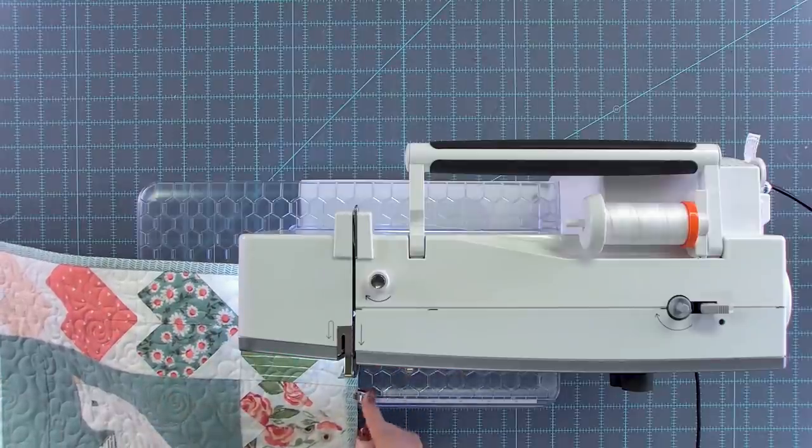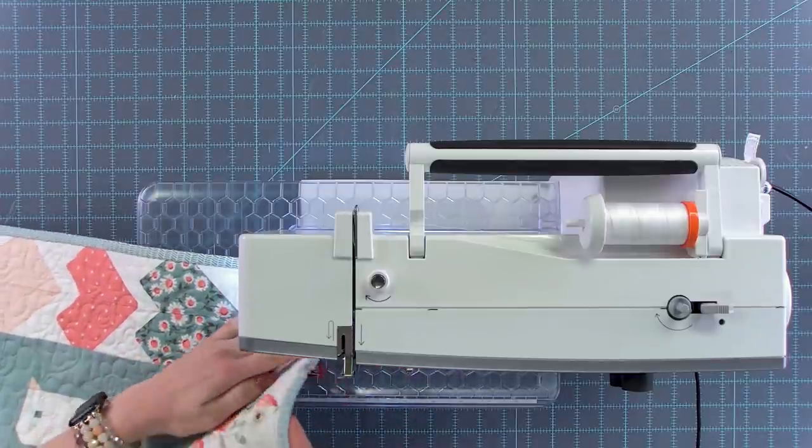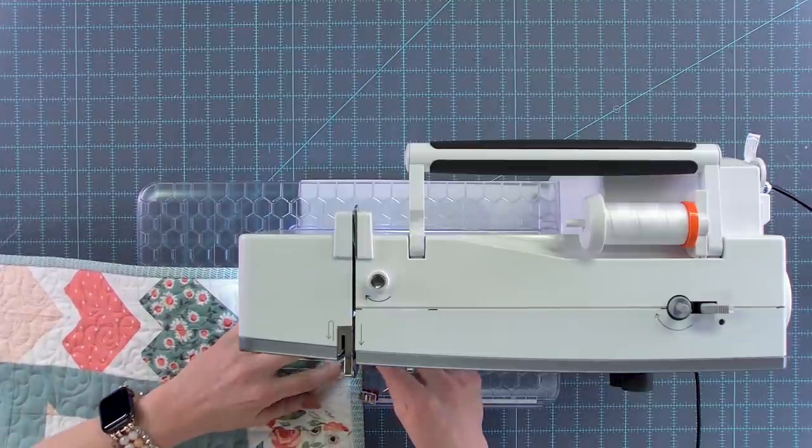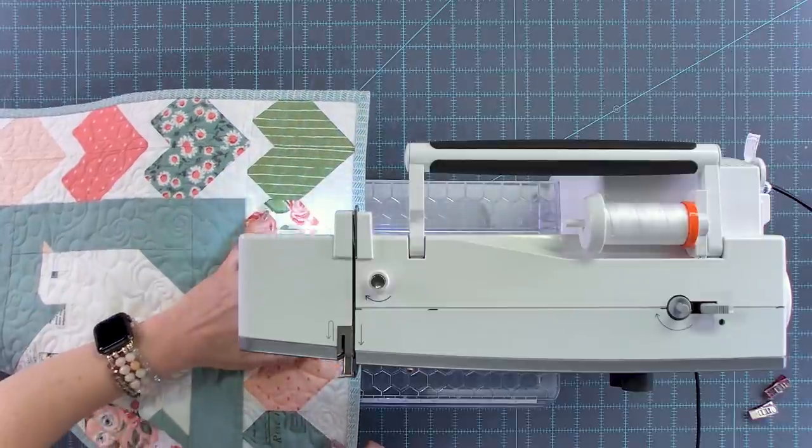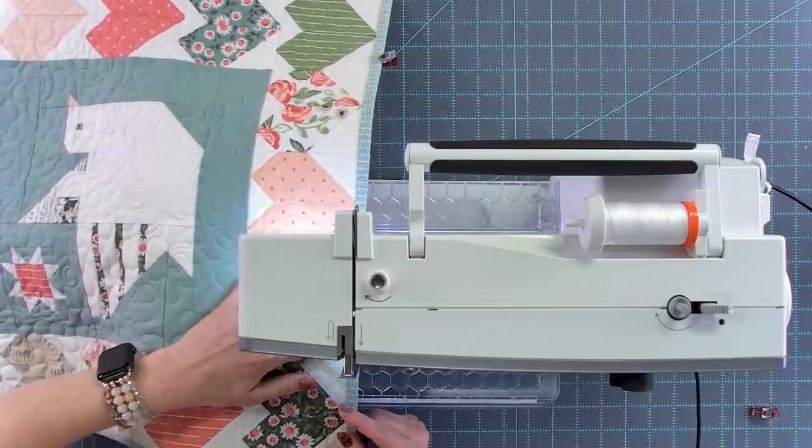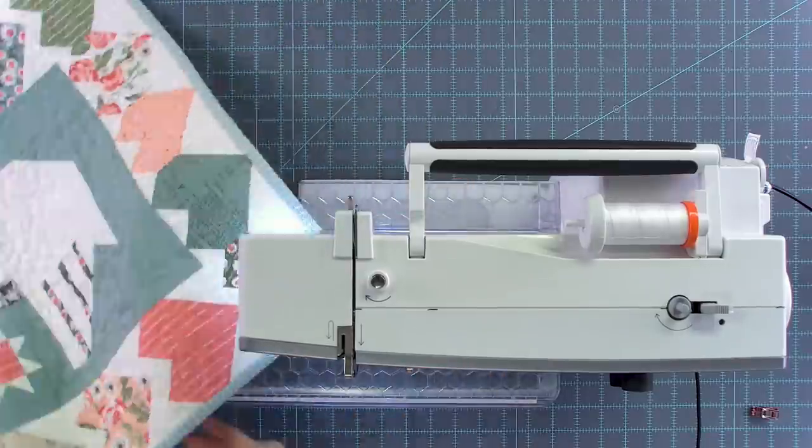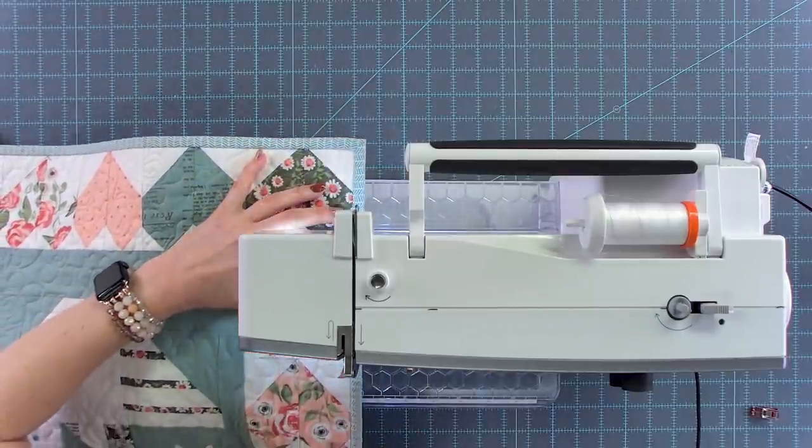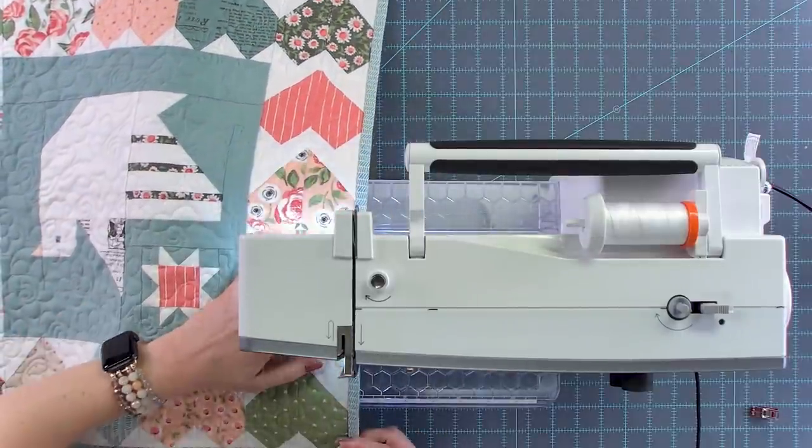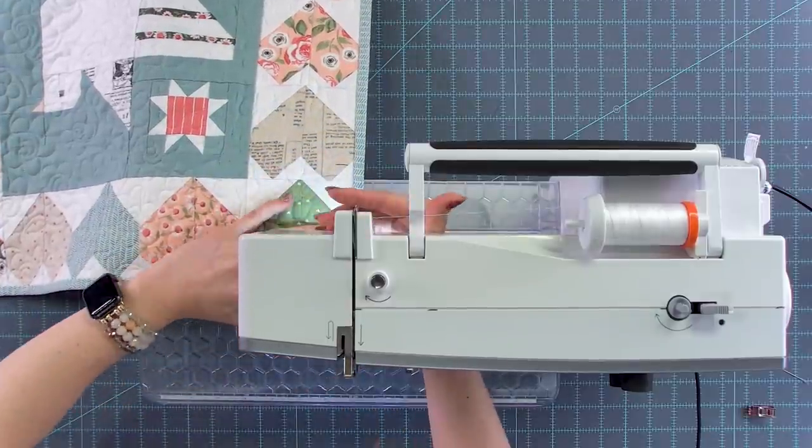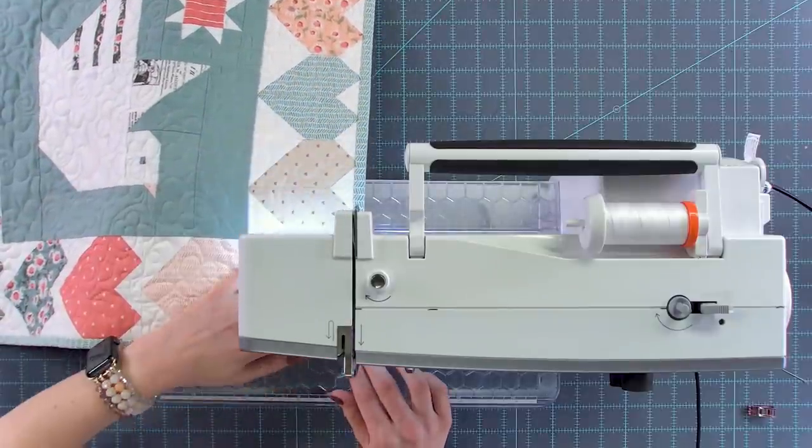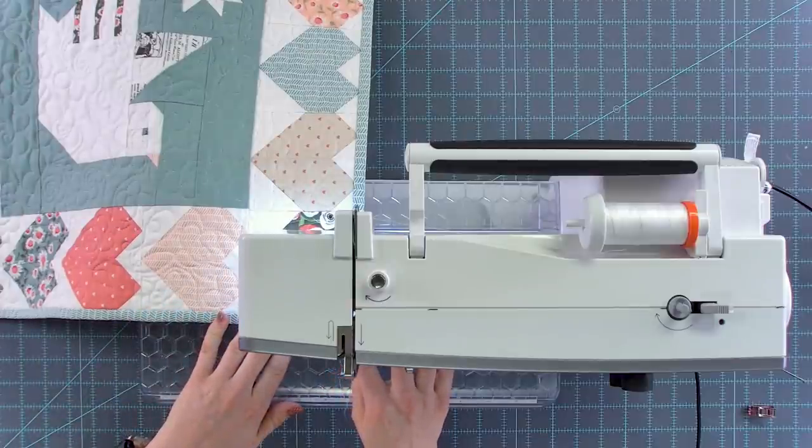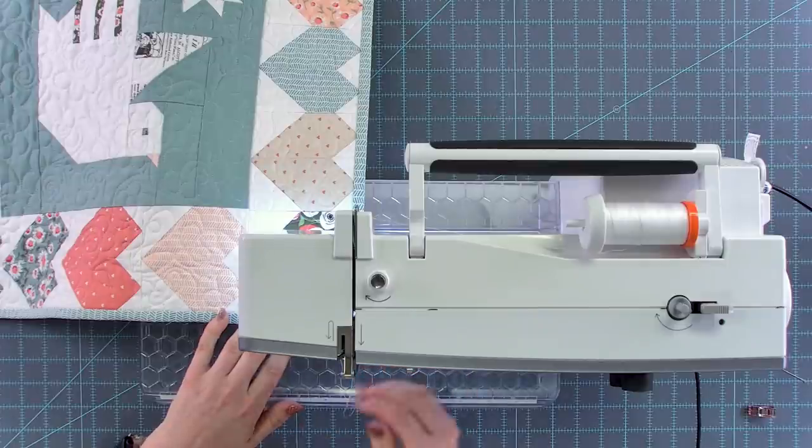And now I'm getting close to my little binding clips so I know that my label is right there. So usually I'll check just to make sure it's straight right before I get to it. Okay so I am reaching the very last corner so what I will do is I'll pivot when I get to it and just go half an inch just to overlap the stitches.